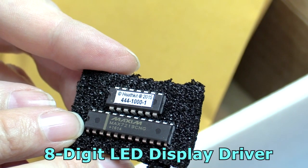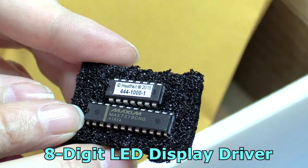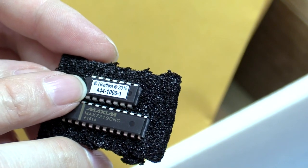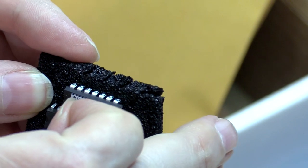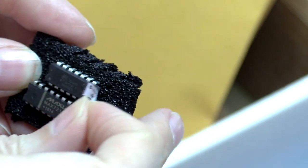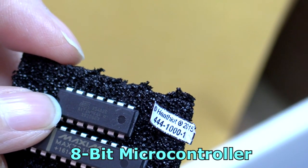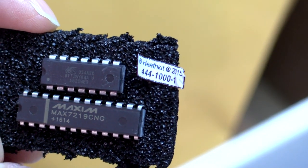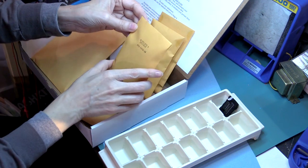I've got a Maxim Max 7219CNG, date code 2016, and the other one here, it's a Heathkit branded 444-1001, but it's just got a little label on it. Voiding the warranty. It's an Atmel ATiny 84A. So Atmel and Maxim. There you go. Already voided the warranty.